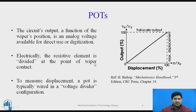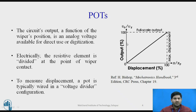We always expect measurement in the linear range and most potentiometers have a very high linear range. Displacement and output are measured — the output being the voltage and the input being the displacement. The circuit's output is a function of the wiper's position and is an analog voltage available for direct use and for digitization. If provided to a computer or controller, this will be converted into digital form.